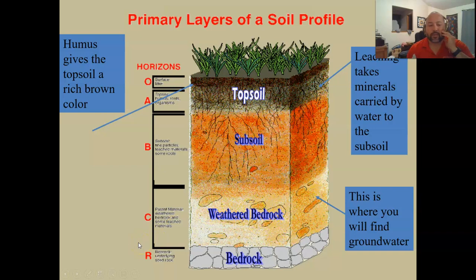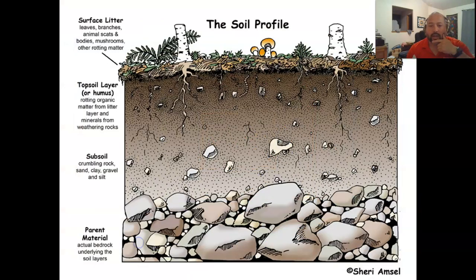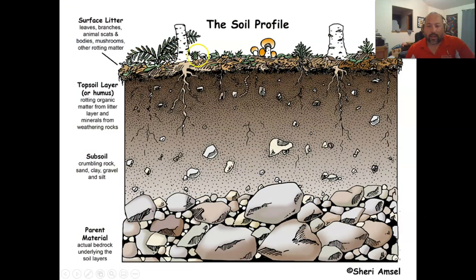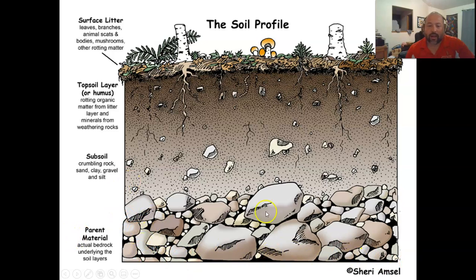Let's take a more detailed look at each layer. So we have our surface litter, our topsoil, subsoil, parent material, and then bedrock would just be a solid mass of rock.